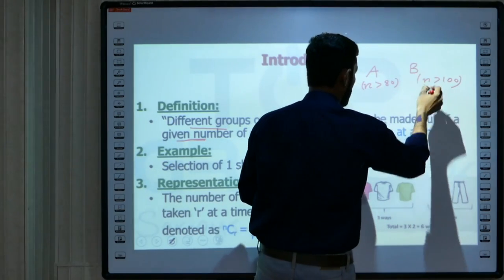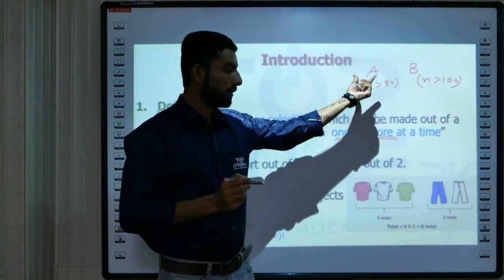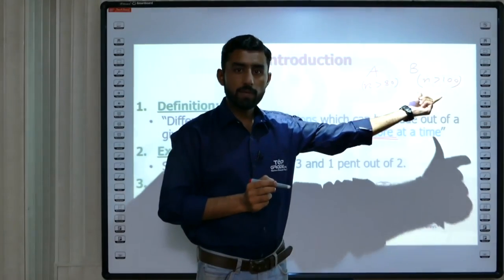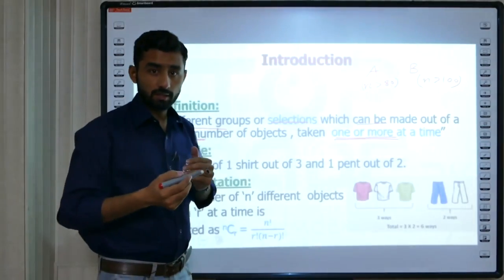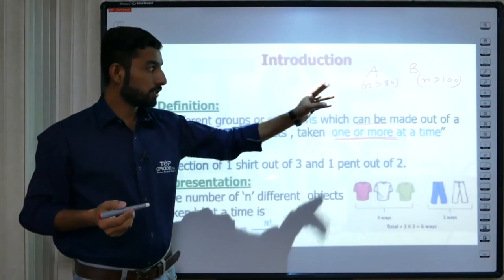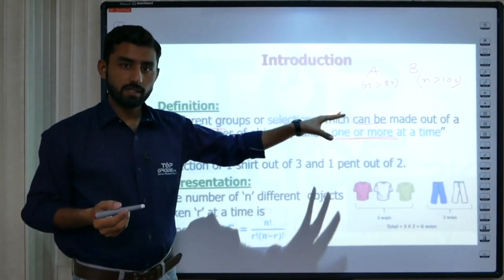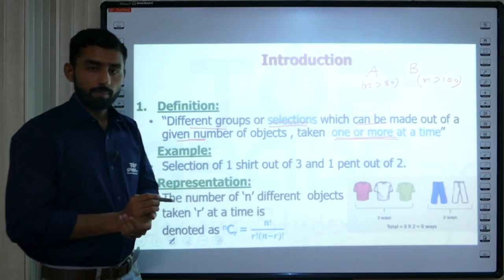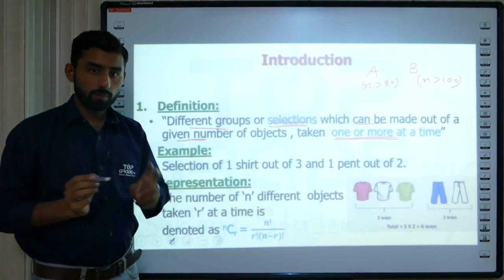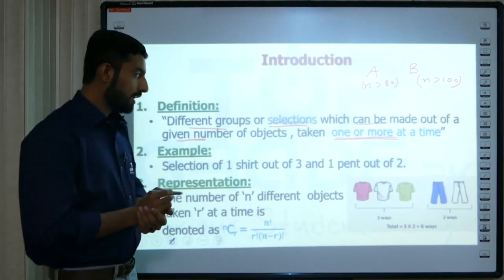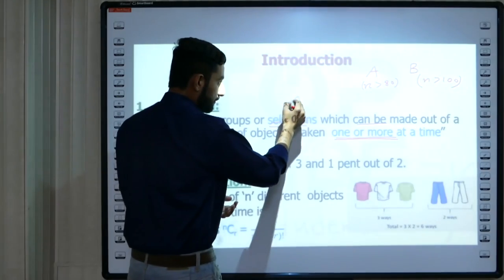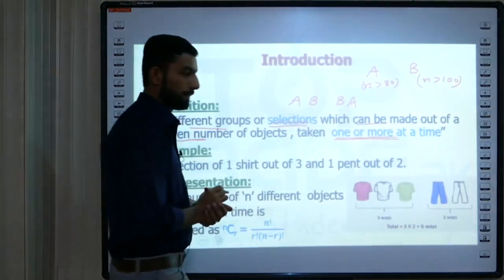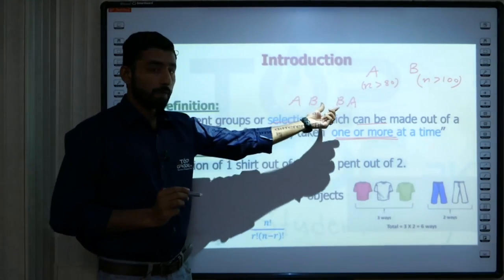For example, selection of one shirt out of three and one pant out of two. The second selection which can be made out of them.